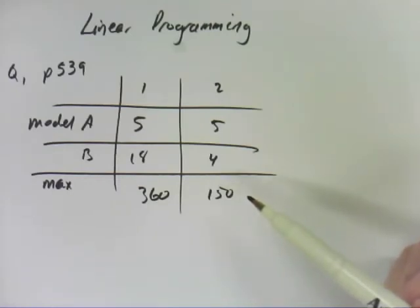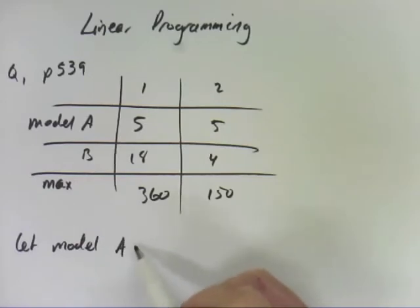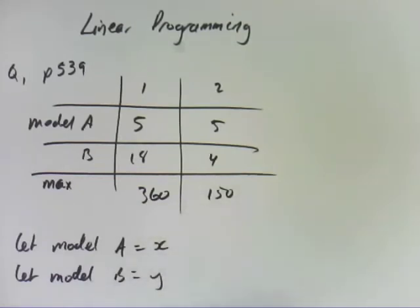So there is a stepwise process you go through here. The first step is decision variables. So what that means is you need to define. So we say let model A equal X, let model B equal Y. So there we have our decision variables. We now have an X and a Y so we can now work with our CAS calculator and our graphs and all that sort of stuff. So that's actually part A done.